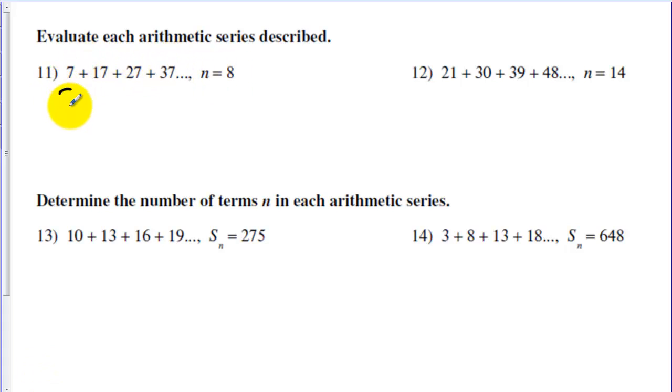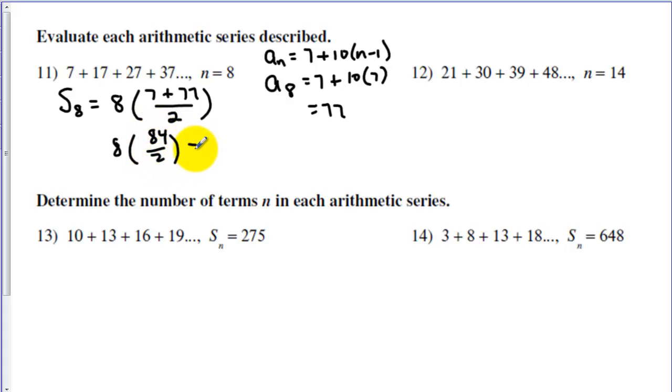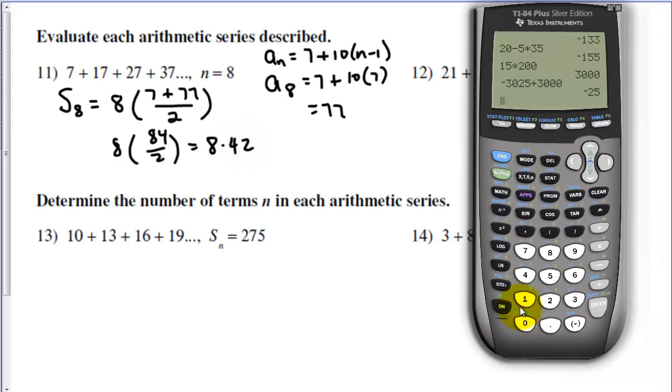Here we want to find S sub 8. That's going to be 8 times the first term. Now we need the 8th term. To do the 8th term, we could either continue this out or write the formula. So the formula for a sub n is the first term plus our common difference, which is 10, times n minus 1. So we need to know a sub 8. And 8 minus 1 will be 7, so we get 77. So we have 8 times, this was going to be 84 over 2, which is 8 times 42. We get 336. So if we added up 8 of these terms, we would have the number 336.